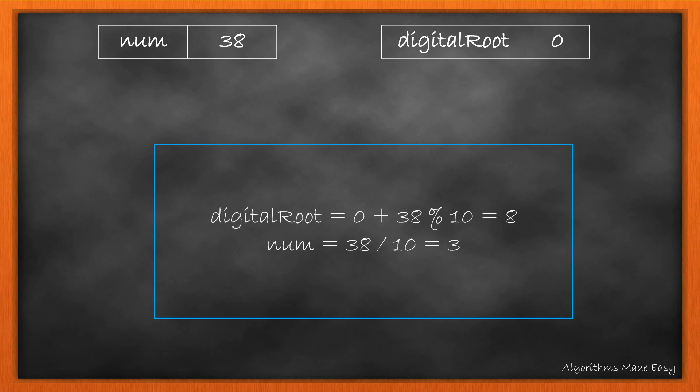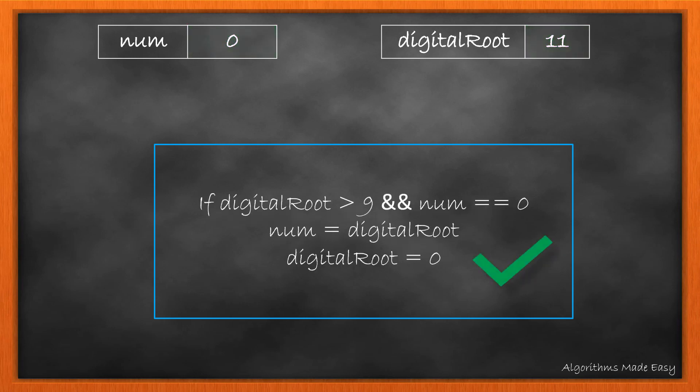So in the first iteration, we get digital sum as 8 and number becomes 3. So we update both. We again perform the same which gives us digital root as 11 and number reduces to 0. As the digital root is still greater than 9, we make the digital root as a new number and reset it to 0.